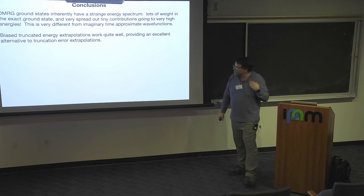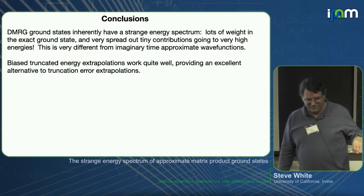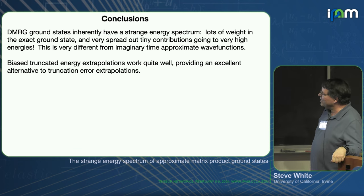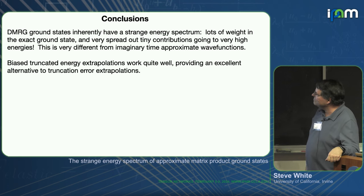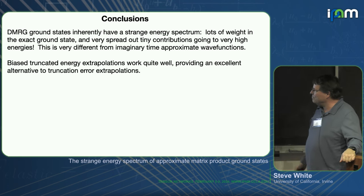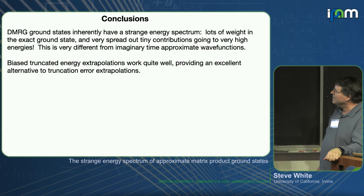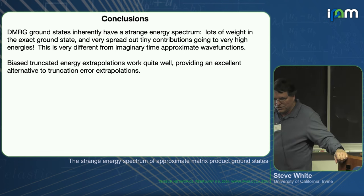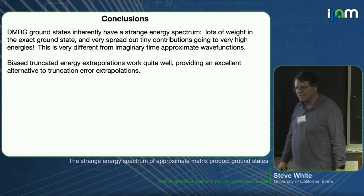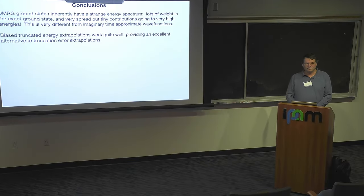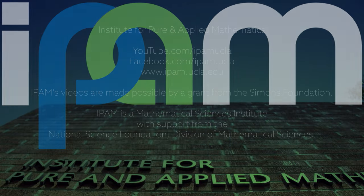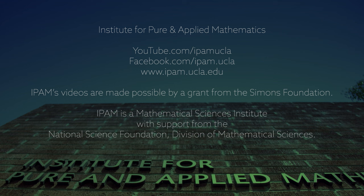In conclusion: DMRG ground states inherently have this strange energy spectrum — lots of weight in the exact ground state and very spread out, tiny contributions going to very high energies. This is very different from imaginary time approximate wave functions. And biased truncated energy extrapolations work quite well, providing another tool in our toolbox for practical DMRG calculations. Thank you.